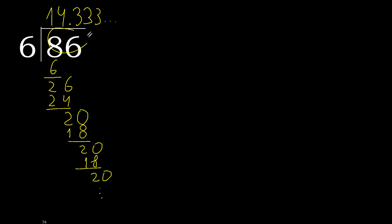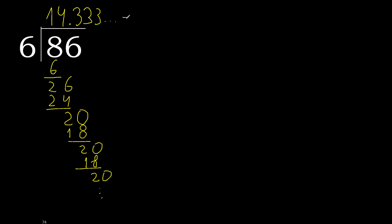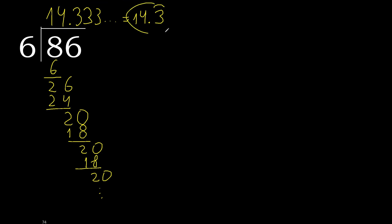86 divided by 6 is: the answer here, and after the decimal point we get 3 repeating. Therefore the answer is written like this, with 3 repeating — or written like this, with a bar over the 3.